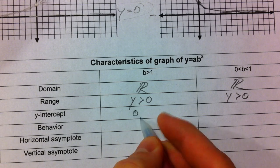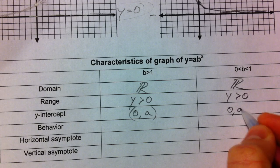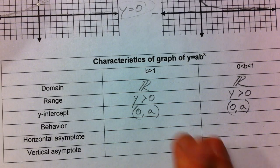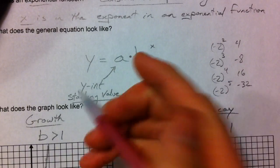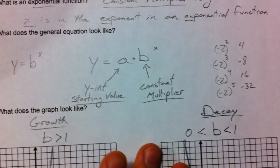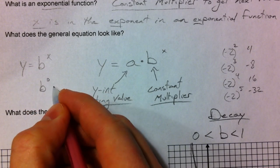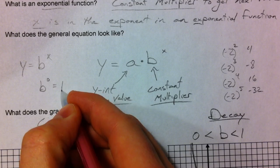The y intercept, like we mentioned, is always your a value, your starting value. Which, by the way, if we don't have an a, say we just had y equals b to the x, b to the 0, anything to the 0 power is 1.